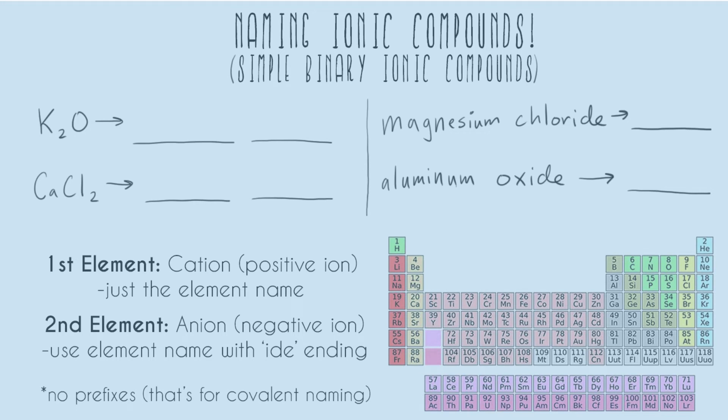In this video I'll be going over naming ionic compounds, and this is just for simple binary ionic compounds. Simple binary means that all of these elements we're going to be able to predict the number of valence electrons they have, and then because of that, what ion they become.